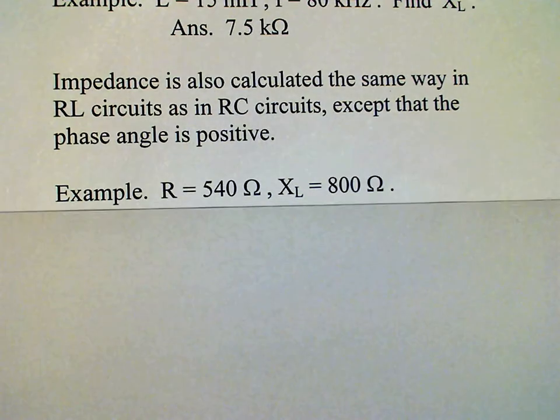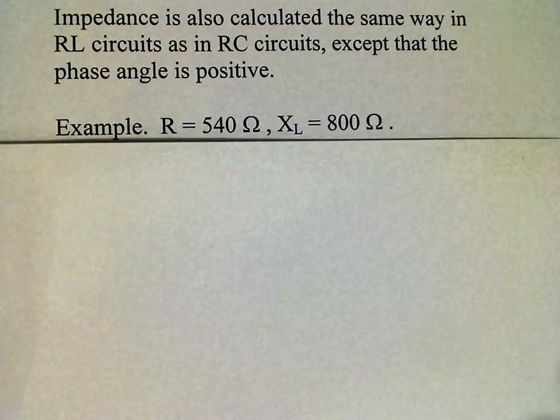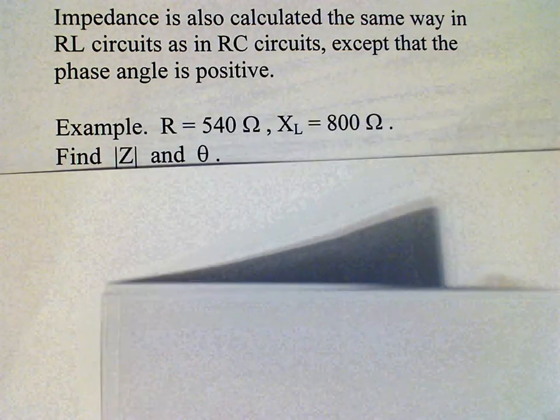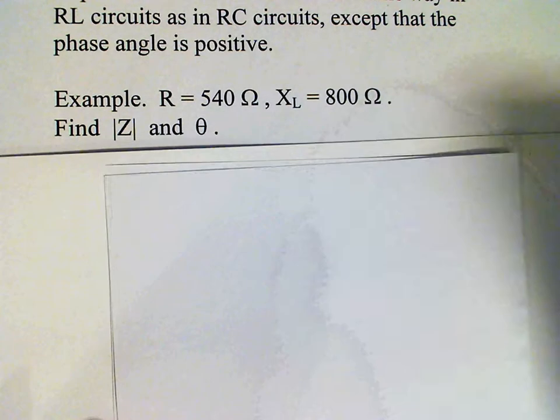Okay, so for example, we have R is 540 ohms and XL is 800 ohms. We need to find the magnitude of the impedance and the phase angle.